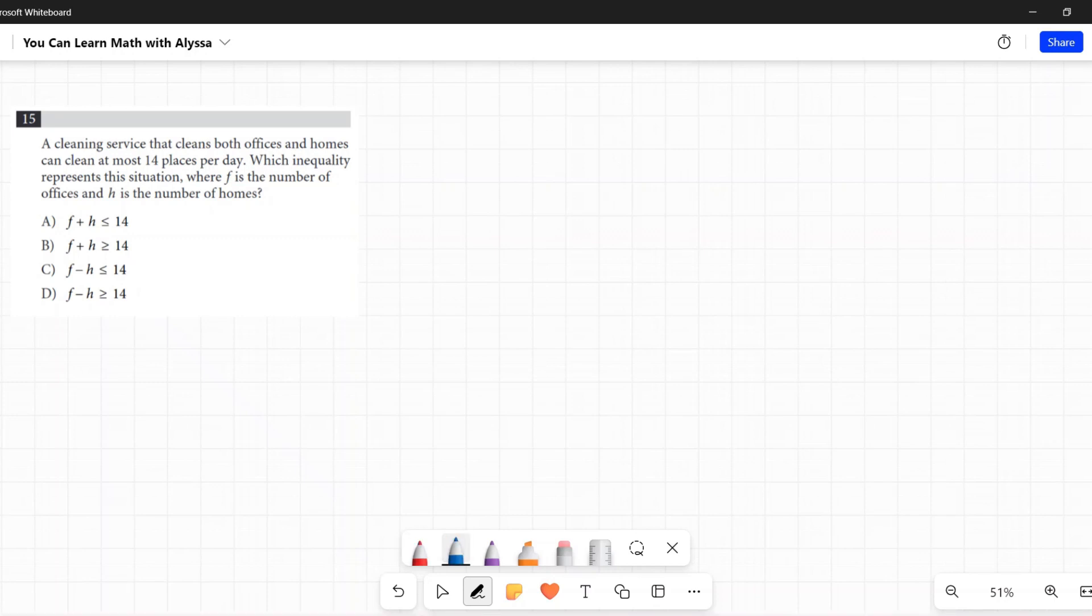So F is our number of offices and H is the number of homes, and together they can clean at most 14 places per day. So together, we're adding them, has to be at most 14.